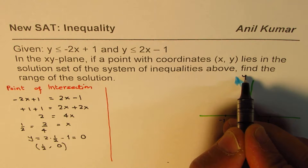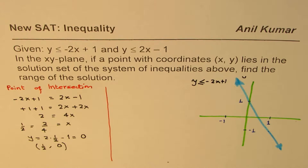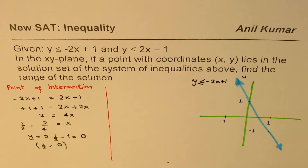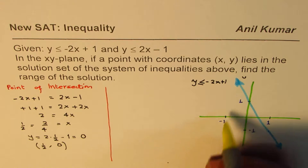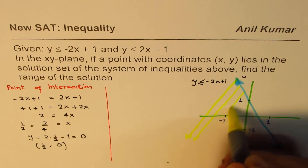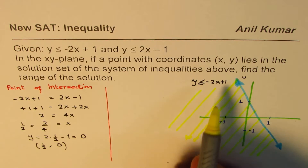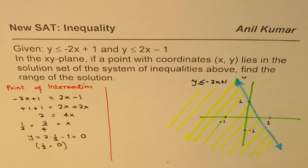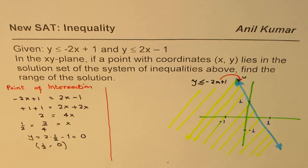Since we want y less than or equal to -2x + 1, we are looking for points on the downside of that line — lower than this value. So we shade the region below the first line. That is the region represented by y ≤ -2x + 1. You can now pause the video and sketch the other line to find the solution.